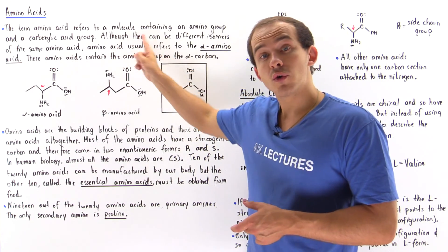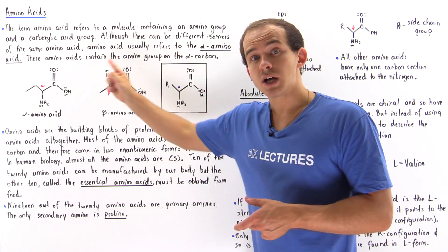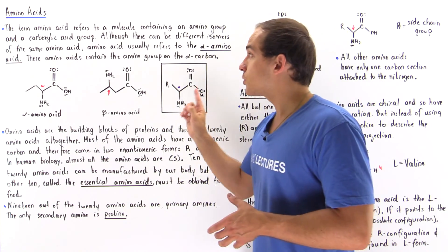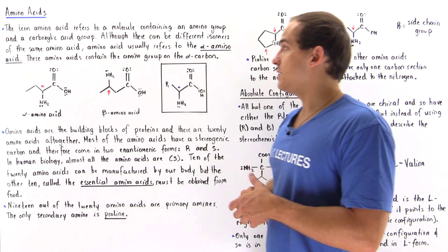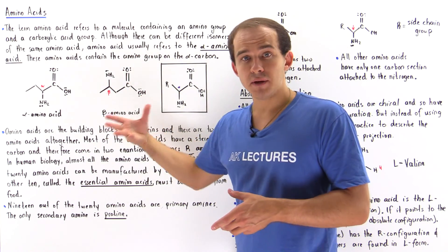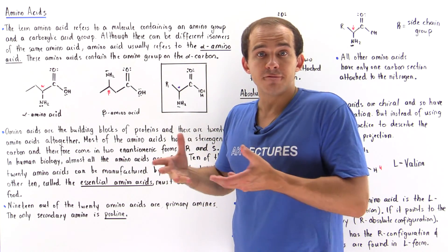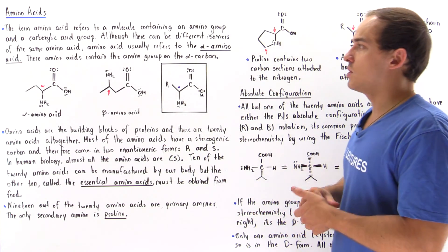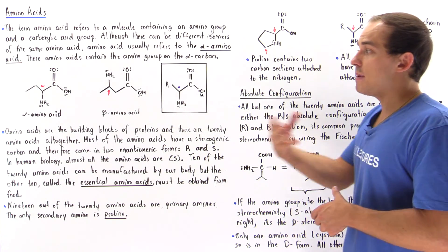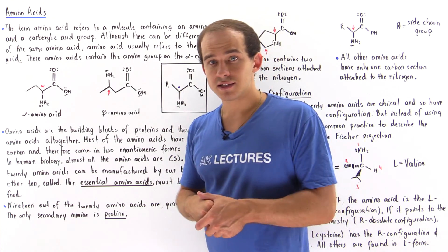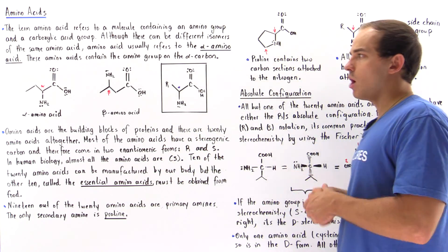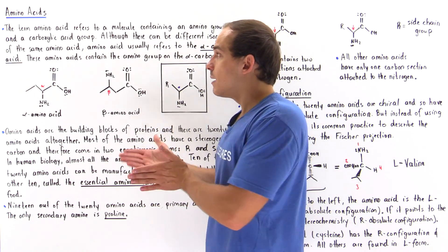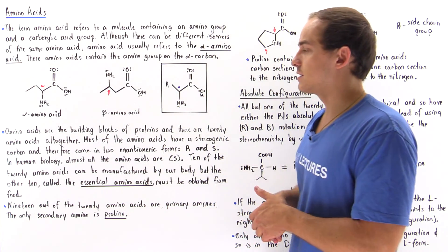Although there can be different isomers of the same amino acid, we basically refer to an alpha amino acid when we say amino acid, because the alpha amino acid is the most common type of isomer. We can also have beta or gamma amino acids, but alpha is the most common, which is why we designate it by simply saying amino acid.